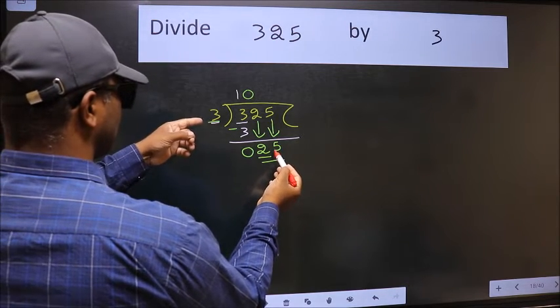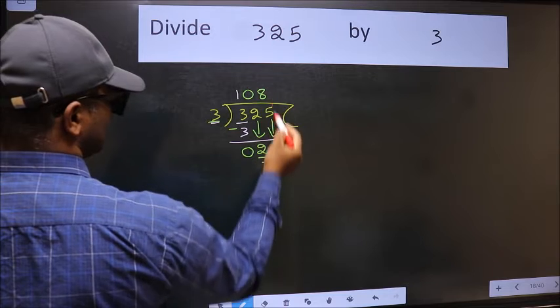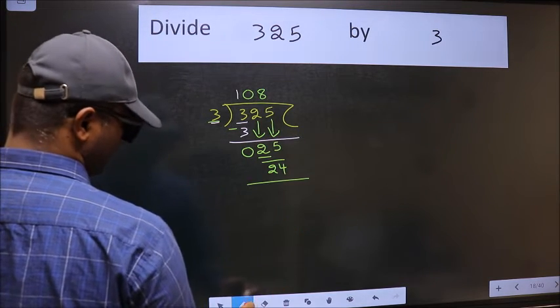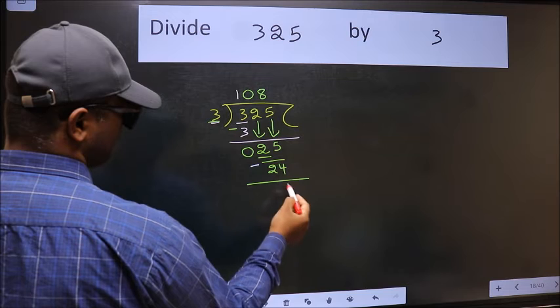A number close to 25 in 3 table is 3 eights, 24. Now we should subtract. We get 1.